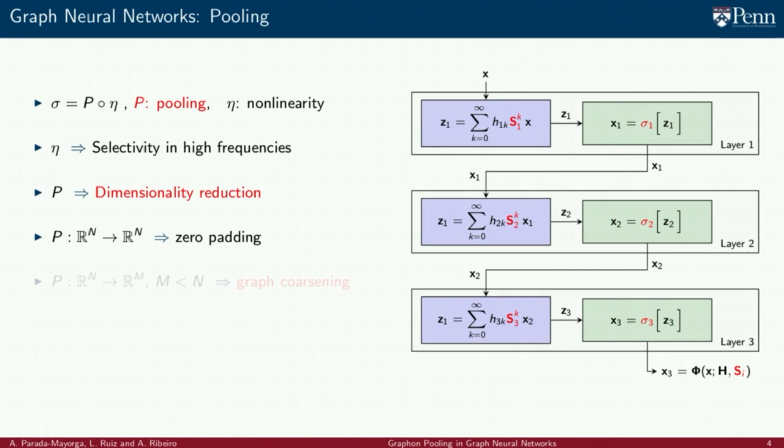On one hand, p maps information from one layer to the other without changing the size of the vectors representing the signals or changing the graphs, but instead zeroing some components of the vectors in each layer. This is called zero-padding.